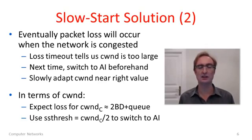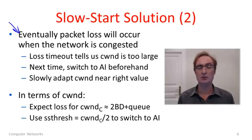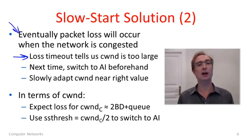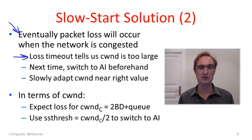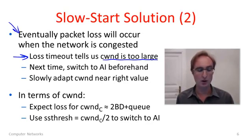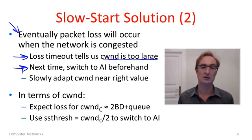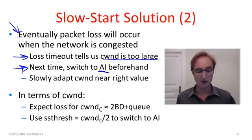But we're not quite done. Slow start can exponentially increase the window size to get to about the right neighborhood, but eventually packet loss will occur. At some stage the window will be too large, we'll be sending too much traffic, queues will build, packets will be lost, and the network will be congested. When that happens we'll get a timeout. Now it's too late — we're already congested, and in fact the loss happened quite a while ago. So CWIN is too large. What we'll do next time we begin to ramp up is switch away from doubling — slow start — to additive increase, which we wanted all along, when we're in the vicinity.